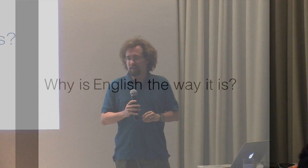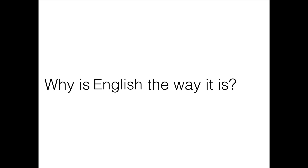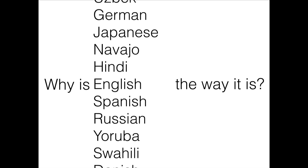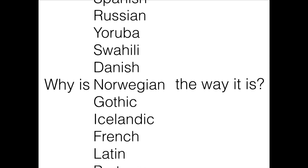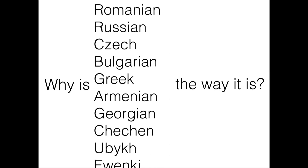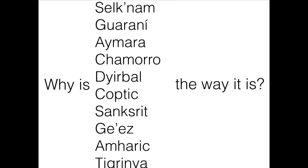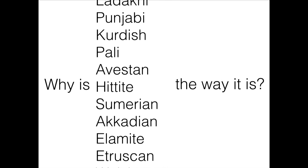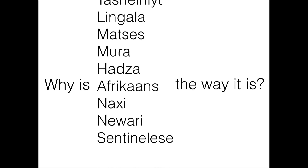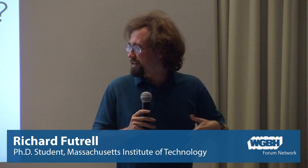I'm interested in this kind of question: why is English the way it is? Why does it have the sound system it has? Why does the grammar have the characteristics it has, and whether we can explain that? Just explaining English would be kind of parochial because there are 7,000 languages currently spoken in the world. When we look at all the languages in the world, we see a huge diversity in how they work, but we also see a lot of recurrent patterns and properties that all languages exceptionlessly have in common.